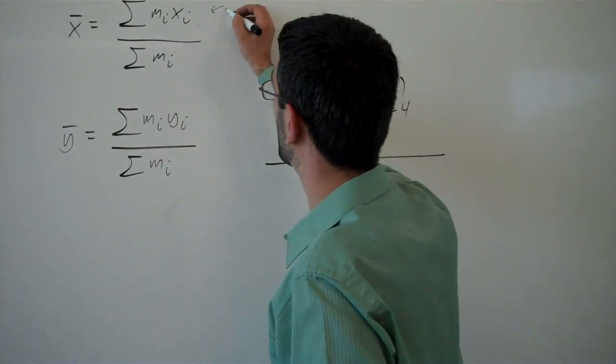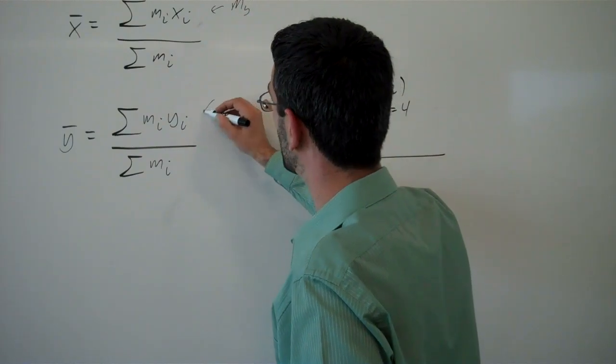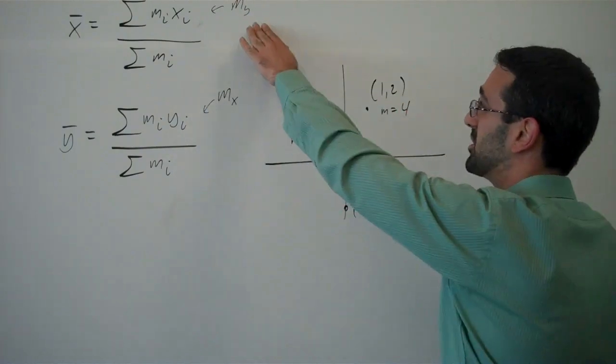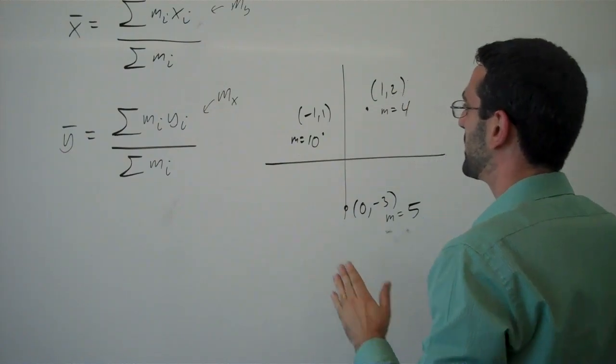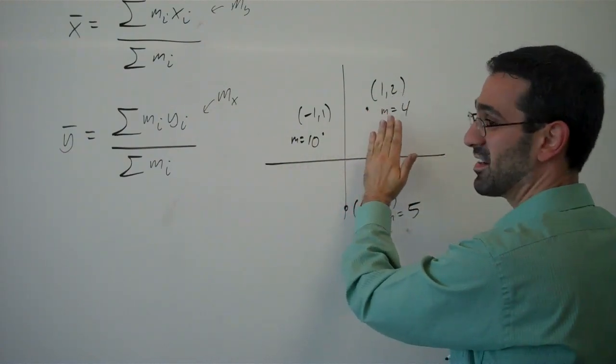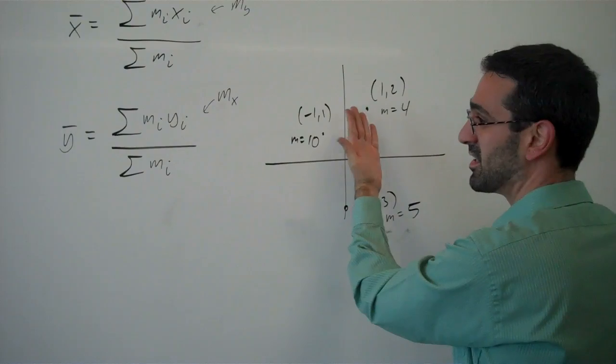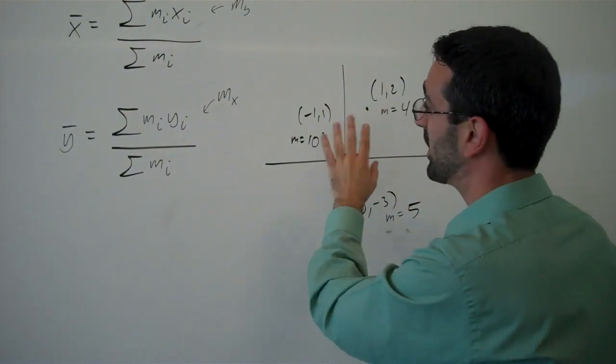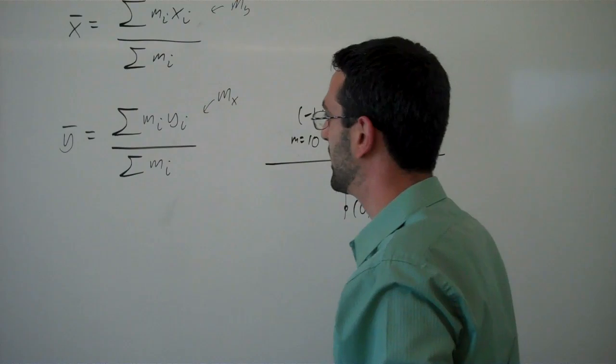By the way, this thing here is sometimes called the moment about y, and this is sometimes called the moment about x. This is called the moment about y, because when we set the x center of mass, it's talking about the tendency of the plane to rotate about the y axis, or to turn this way.